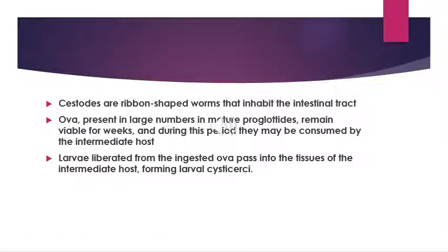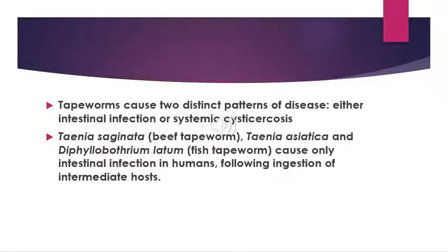Tapeworms are flat hermaphroditic worms that can live as parasites in the human gastrointestinal tract. Some of these organisms are primarily human pathogens, while others have animals as their natural hosts but can also cause human infection. We can divide them as causing intestinal infection or systemic infection. For example, Taenia saginata, Taenia solium, and Diphyllobothrium latum can cause intestinal infection in humans following ingestion of intermediate hosts.